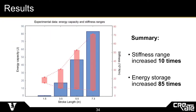The results of the compression experiment show that the energy capacity and the stiffness range both increase as the chamber volume — the active length of the spring — increases. Stiffness range increased 10 times, and the energy storage capacity increased 85 times, with a 5 times increase in volume. These results validate our conceptual and theoretical predictions: with a small increase in chamber volume, a large increase in stiffness range and energy capacity was attained.